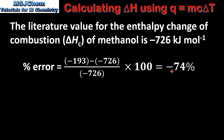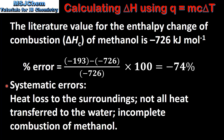The negative sign tells us that our experimental value is less than the literature value. Finally, we will look at the systematic errors in our experiment. The possible systematic errors are heat loss to the surroundings, not all of the heat being transferred to the water, and the incomplete combustion of the methanol. All of these errors would result in our experimental value being much lower than the literature value.